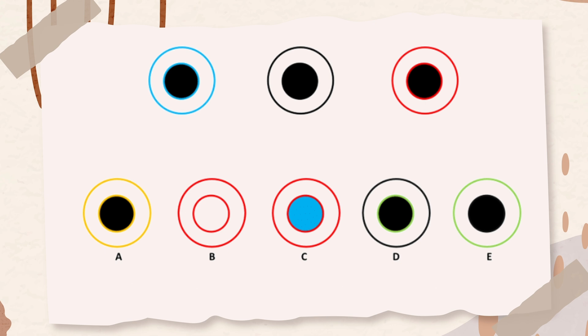All shapes contain a bigger circle and a smaller circle within the bigger circle. Both inner and outer circles have the same border color. In addition, the inner circles are filled with black color. The only option that meets the given criteria is option A. Therefore, option A is the correct answer.